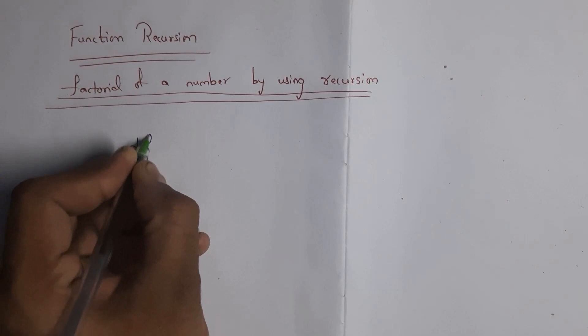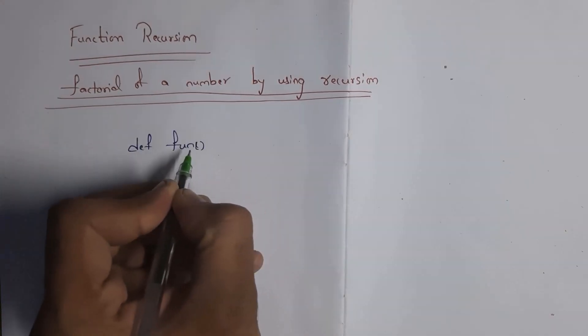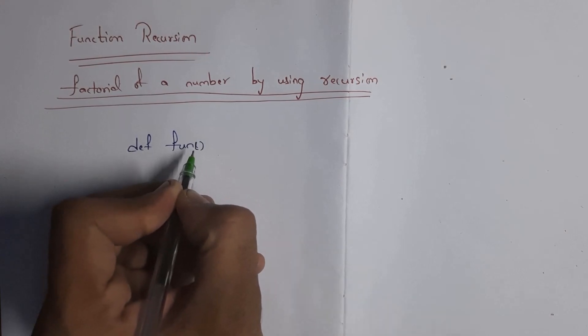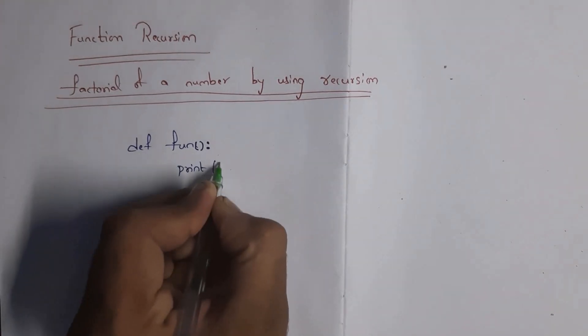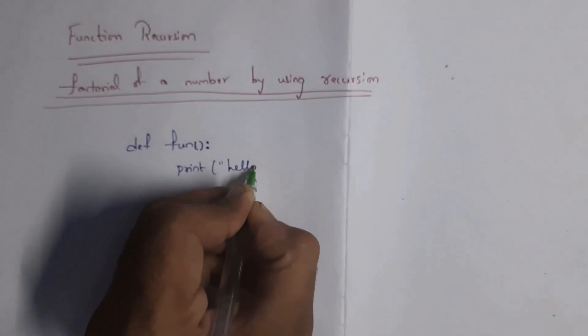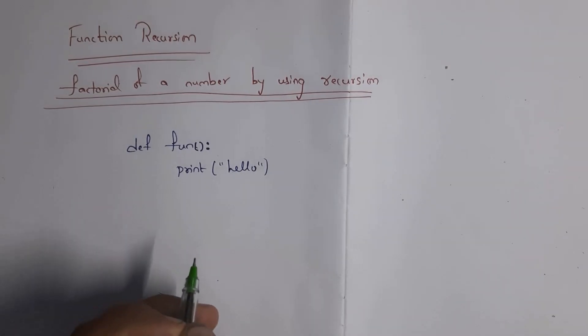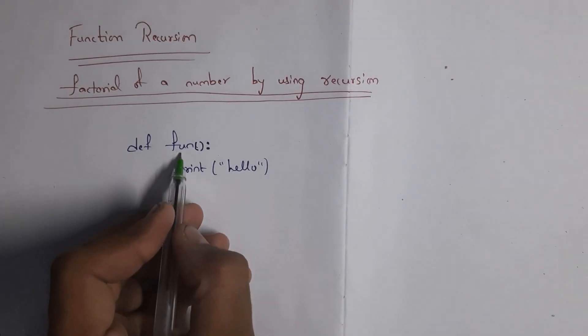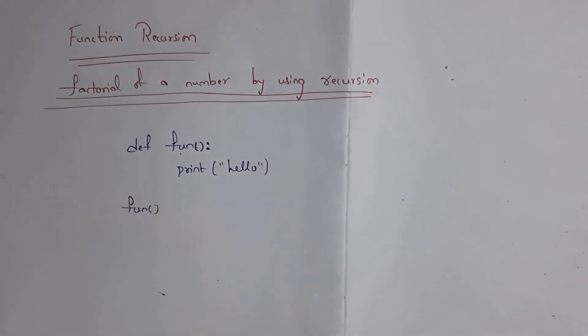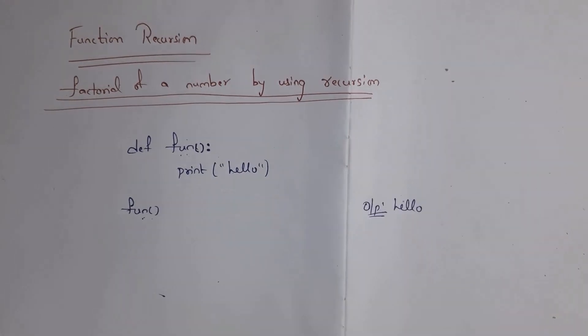For example, let us create one function. As you know, we create a function by using the keyword 'def'. So first write 'def' and you can give any name to your function — let the function name be 'fun'. We represent the function with brackets and give a colon. Inside this function I am writing the statement: print 'hello' — hello is a string so we write it in double quotations. After creating the function we need to call it, so just write the function name 'fun' to call it.